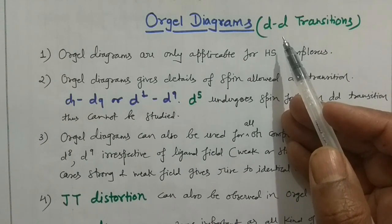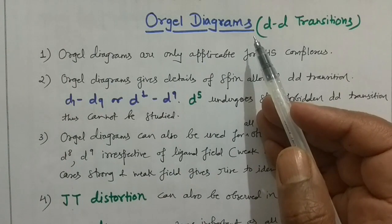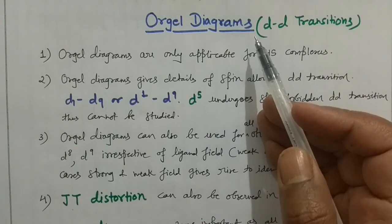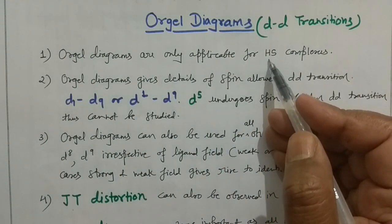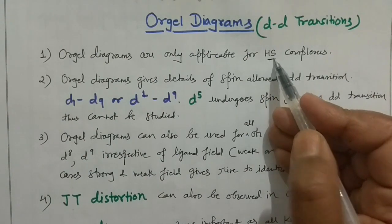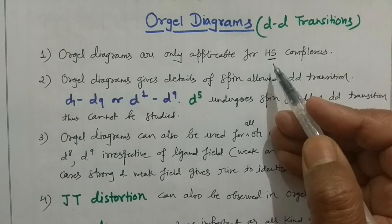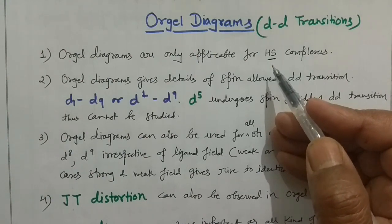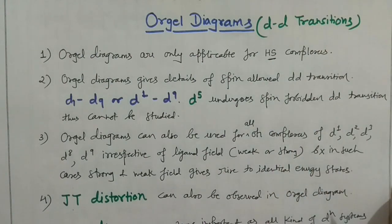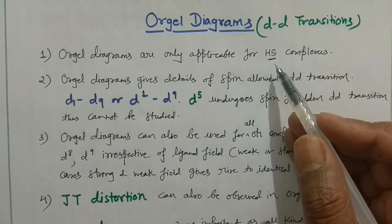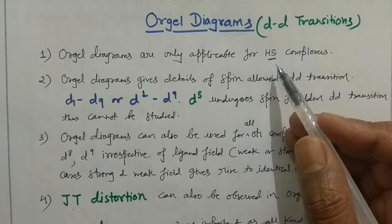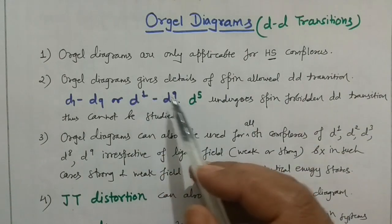Orgel diagrams are only applicable for high spin complexes — this is written in textbooks as well. However, for systems above d7, there is no distinction between high spin and low spin, so in those cases they will also work for low spin. This applies whether it is an octahedral field or a tetrahedral field — both cases are covered.